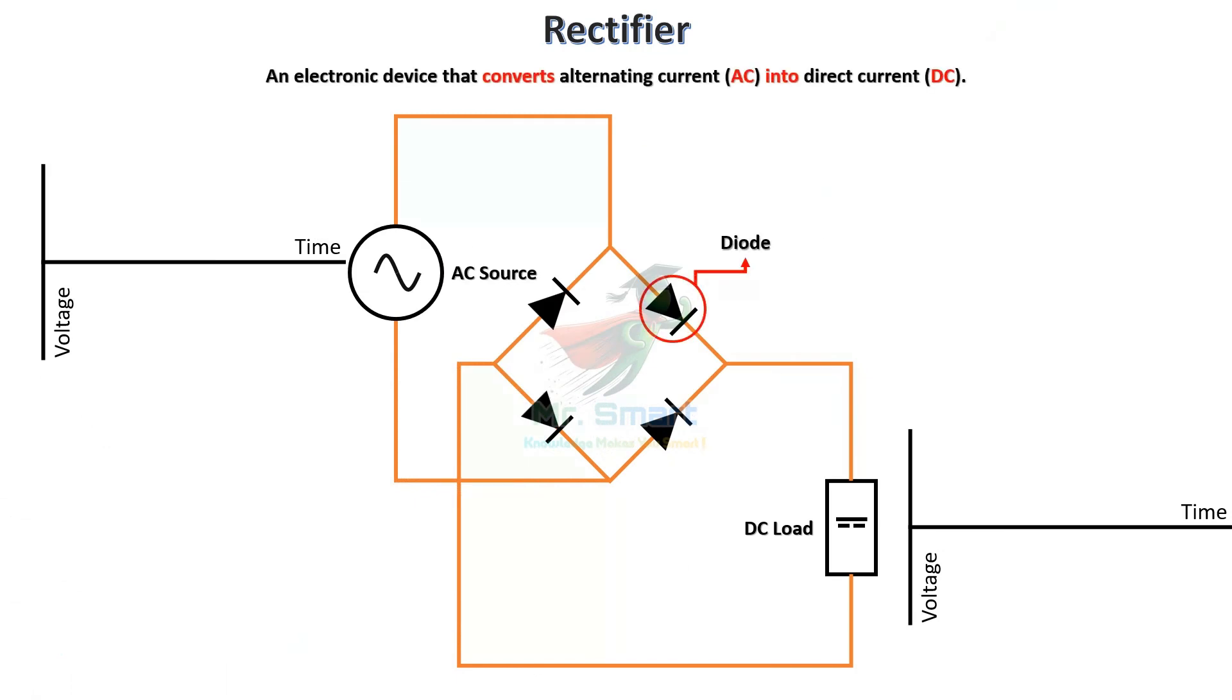A rectifier is an electronic device that converts alternating current AC into direct current DC. It is constructed using an electronic device called diode, a one-way valve for electricity, ensuring current flows in only one direction.